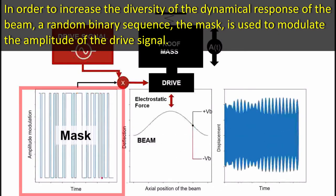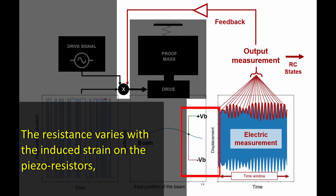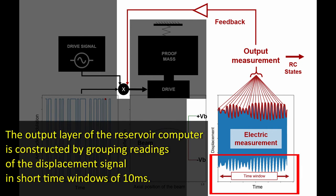In order to increase the diversity of the dynamical response, a random binary sequence, the mask, is used to modulate the amplitude of the drive signal. The measurement apparatus is connected to the piezoresistors attached to the sides of the beam. The resistance varies with the induced strain on the piezoresistors, allowing the electrical measurement of the amplitude of the oscillation.